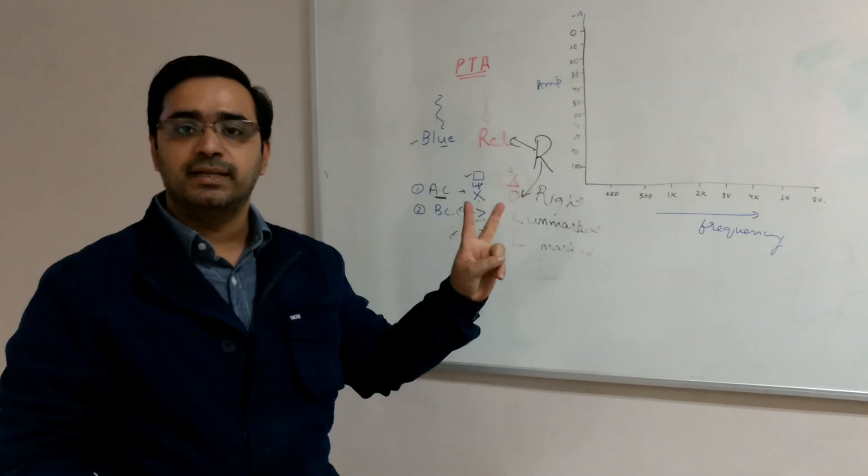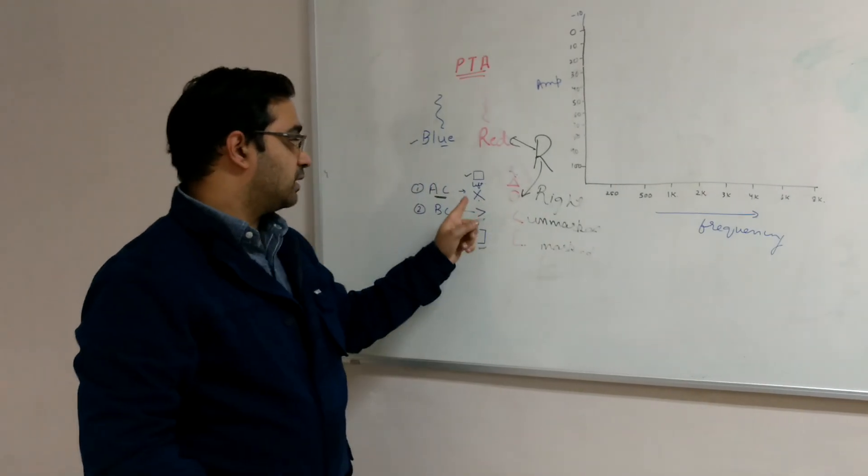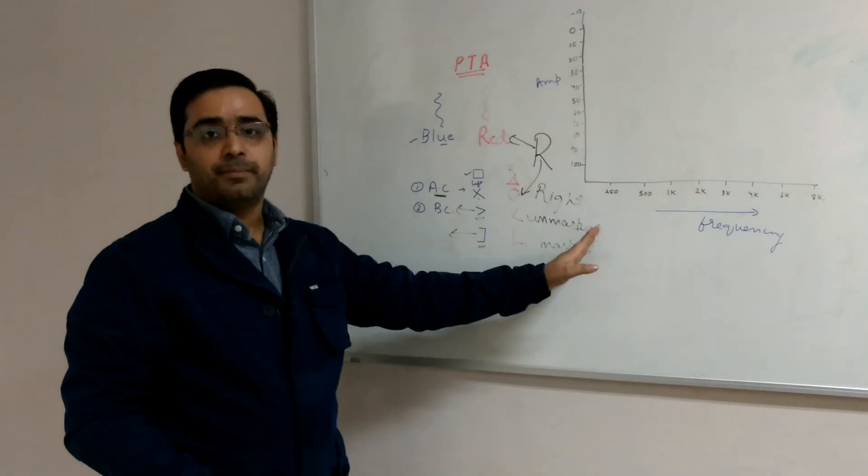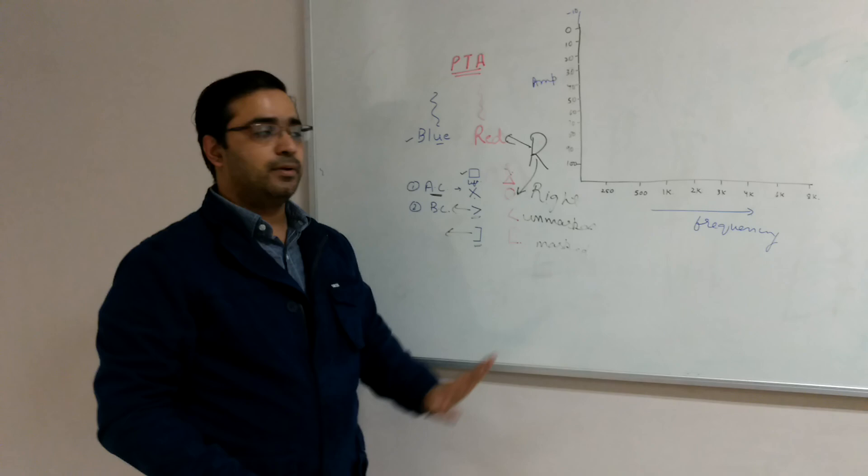First thing blue is left, red is right. Second thing symbols: cross is left, round is right. Which side this is opening in bone conduction is the side.